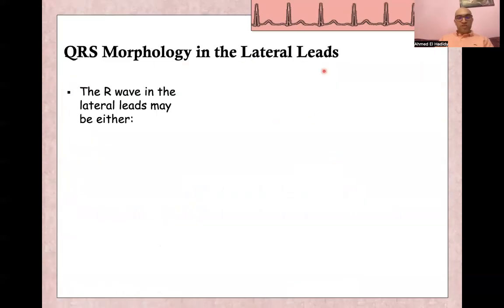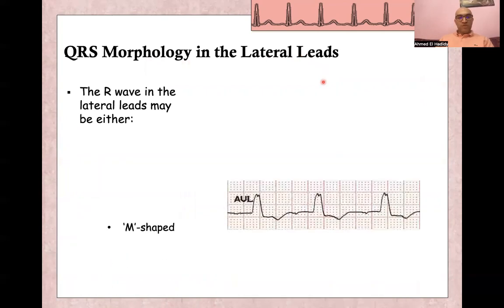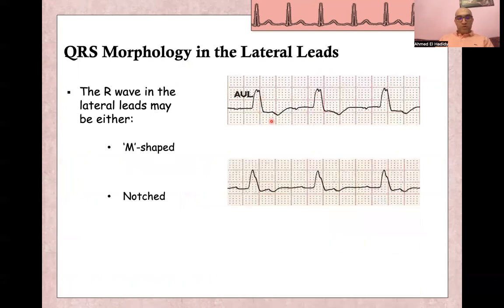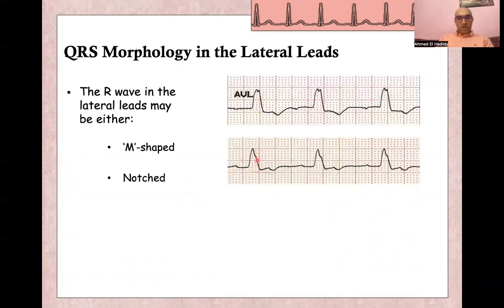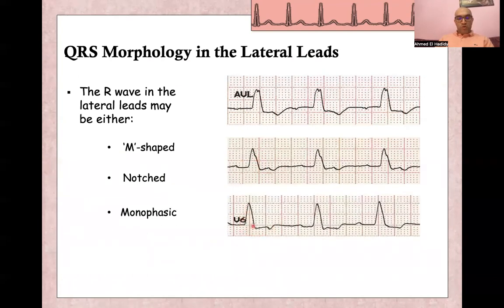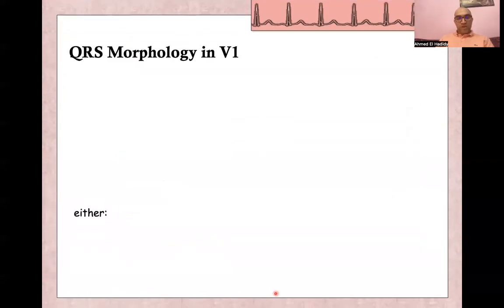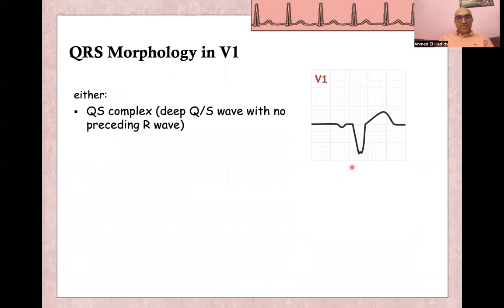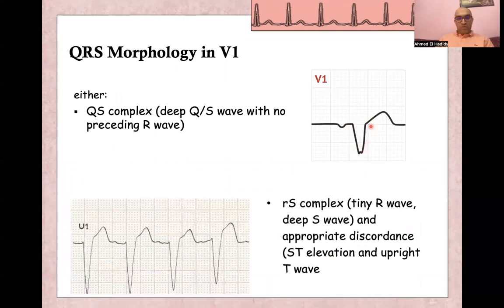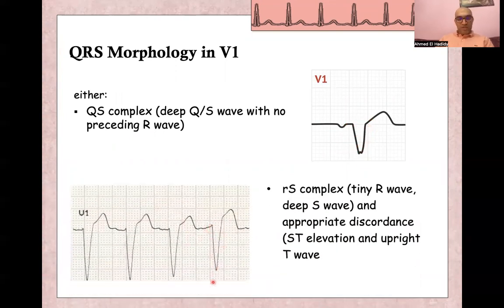The QRS morphology in lateral leads V5 and V6 can take many shapes: an M-shaped complex, a notched R wave, a monophasic R wave, or a biphasic RS morphology. In V1, the morphology is either a deep QS pattern with no R wave at all, or a small r wave with a deep S wave — both associated with appropriate discordance, showing ST elevation and positive T wave since the complex is predominantly negative.